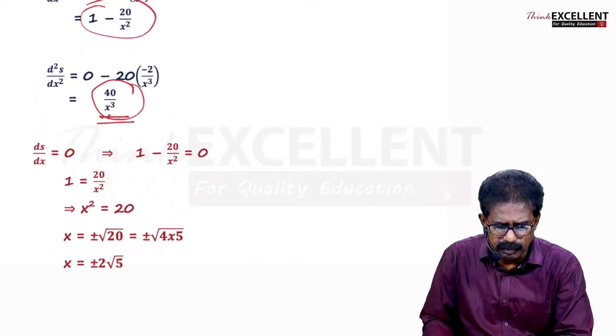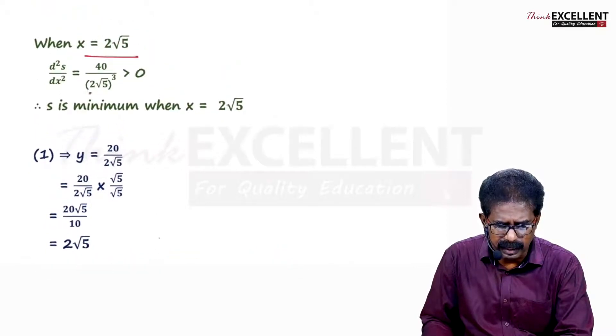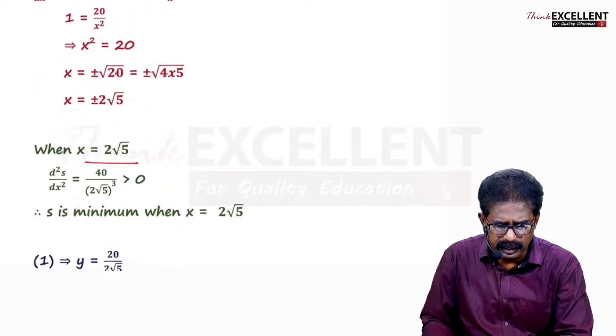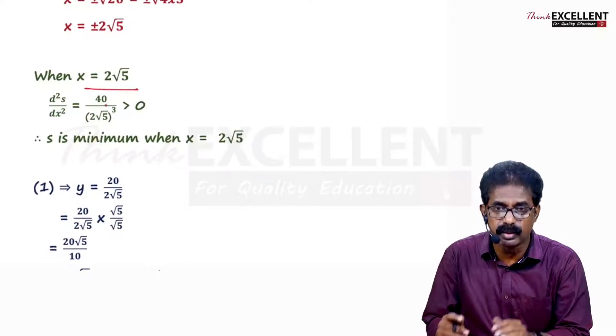What is second derivative? 40 by x cube. So substitute here. When you substitute in the second derivative, you are getting a positive value. No need to even simplify. 40 by 2 root 5 the whole cube.